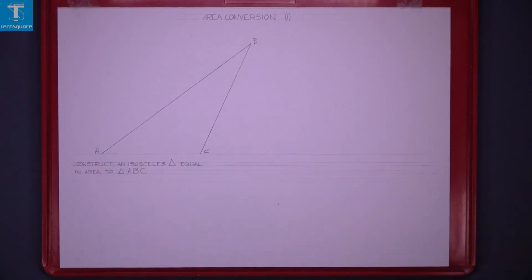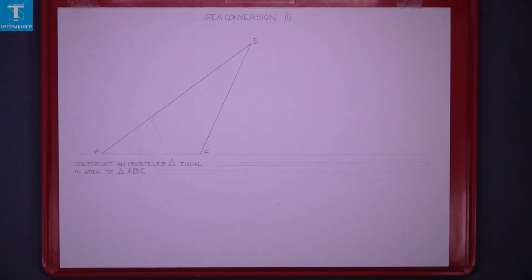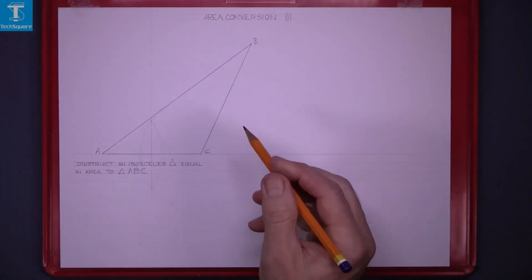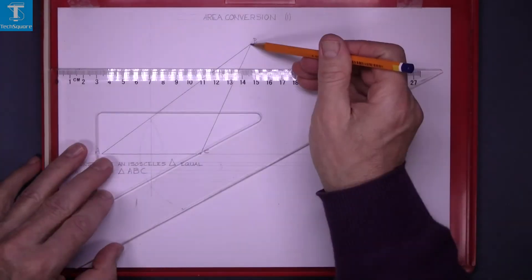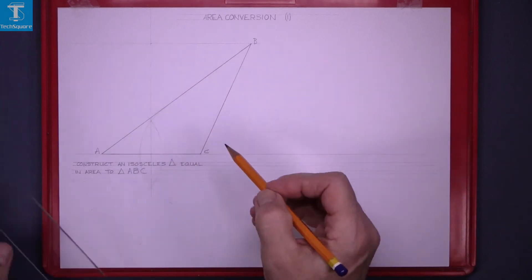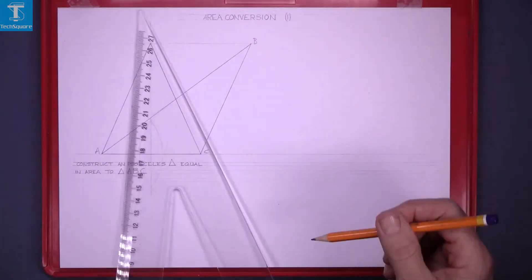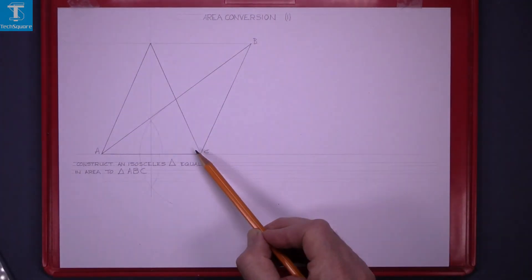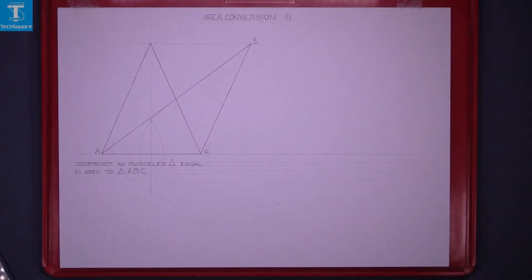So the first thing we'll do is we'll bisect the base. So using the compass bisect the base, draw vertically up. Now from the top point B draw parallel to the base and where that intersects the vertical line join that point back down to the two points on the base. And that triangle there is an isosceles triangle equal in area to the given triangle ABC.